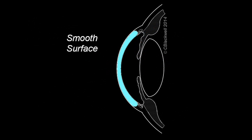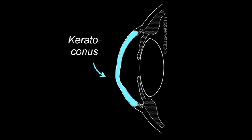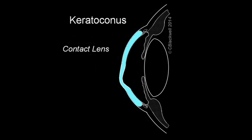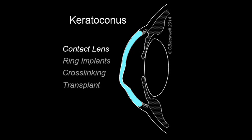Edema usually results when the endothelial cells are not pumping enough to keep the cornea dry. Vision can also be reduced if the smooth, regular shape of the cornea is affected. For example, some people develop a condition in which the cornea thins and bulges forward, called keratoconus. If distortion is only mild to moderate, it can often be managed by wearing a hard contact lens. If that doesn't work, there are other options, including corneal transplant.